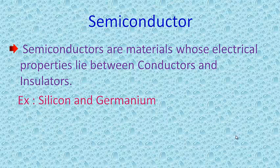First of all, what is meant by semiconductor? Semiconductors are materials whose electrical properties lie between conductors and insulators. A semiconductor is a material that has unique properties in the way it reacts to electric current — it has much lower resistance to the flow of electrical current in one direction compared to the other. Examples are silicon and germanium.